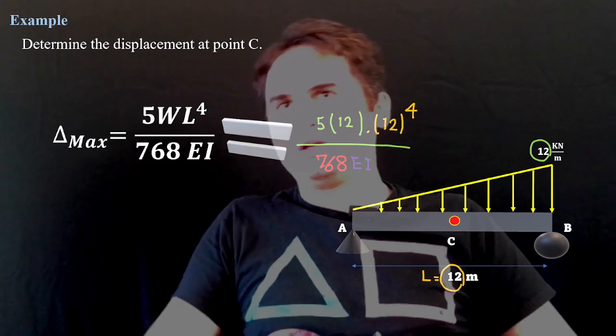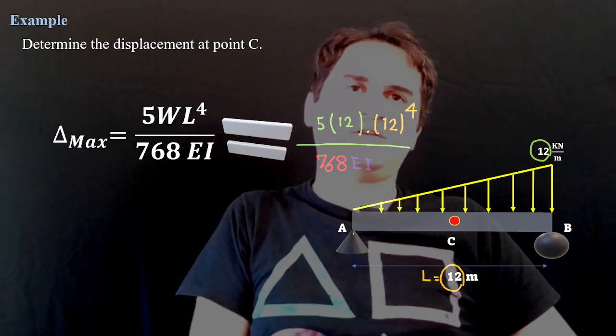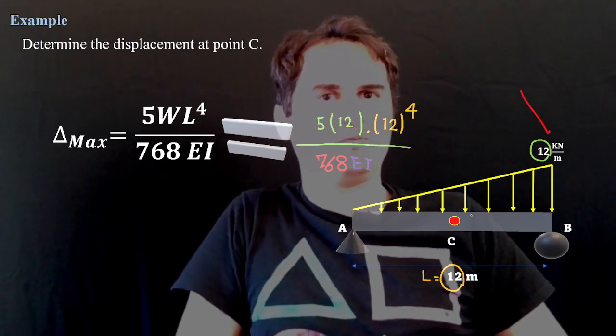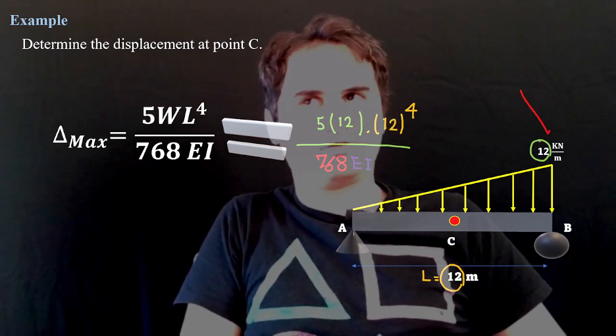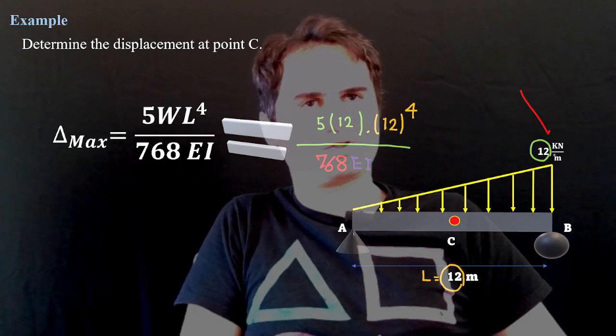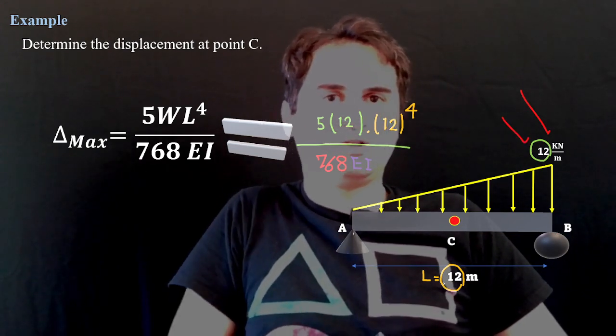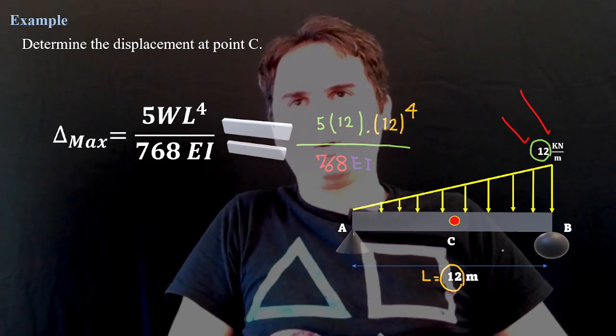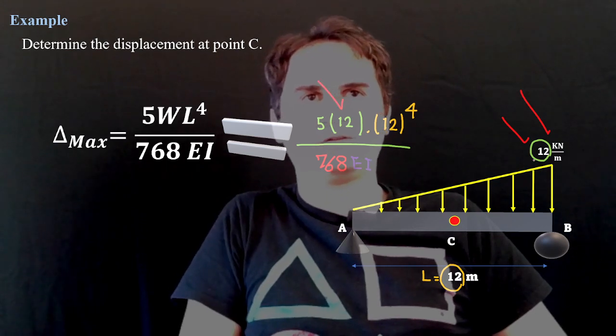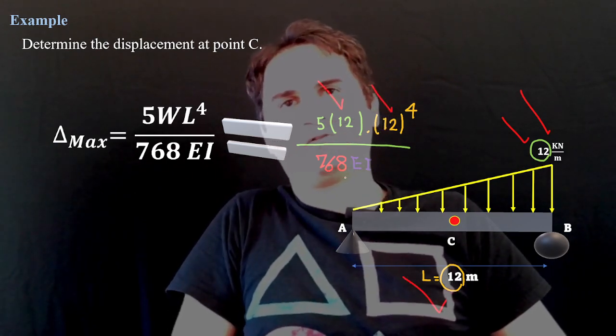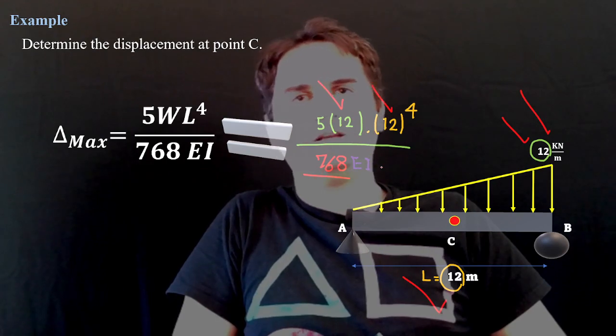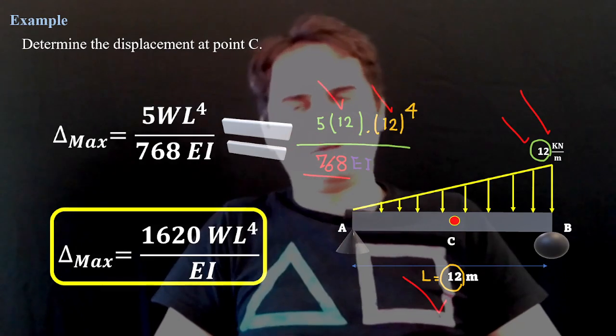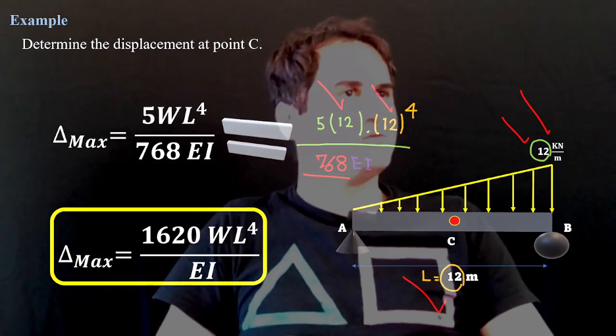With this configuration, solve the problem parametrically first, then replace with actual values. The problem gives us 12 kN/m load intensity and a span length of 12 meters. Substituting into 5WL^4/(768EI) gives the final deflection value. We will solve more examples. Thank you.